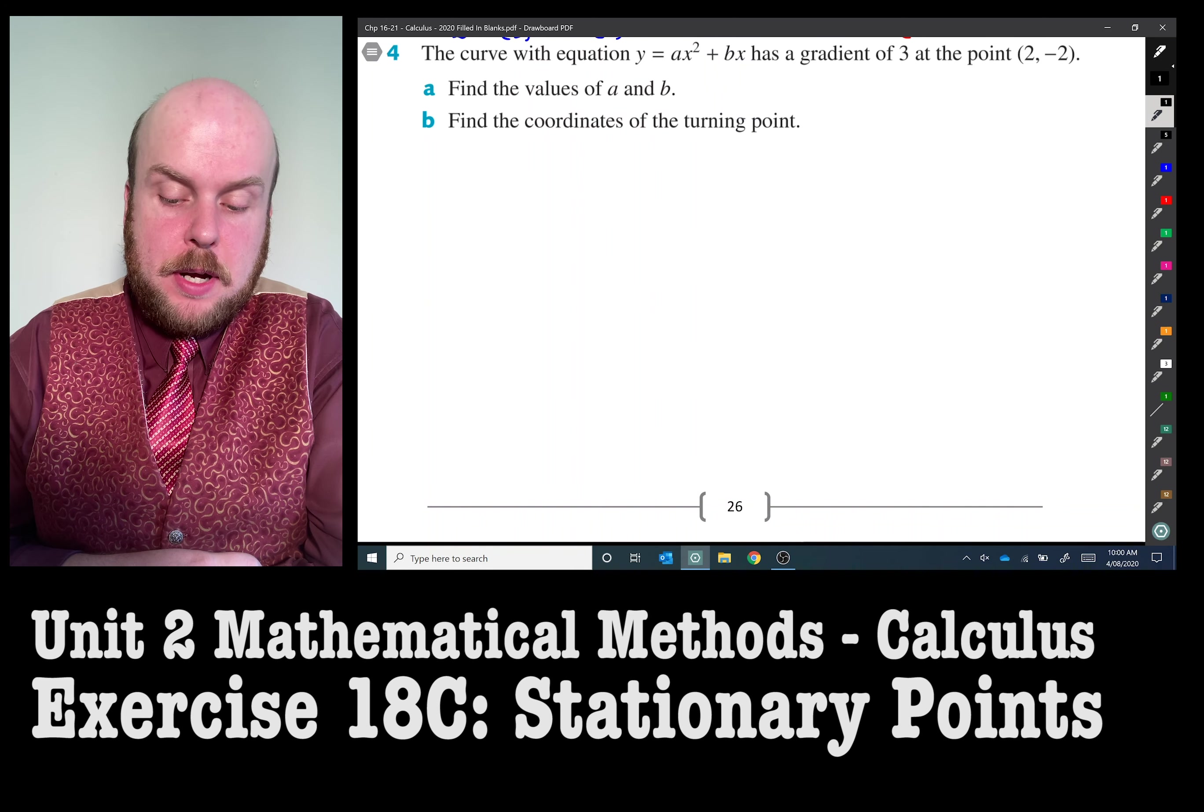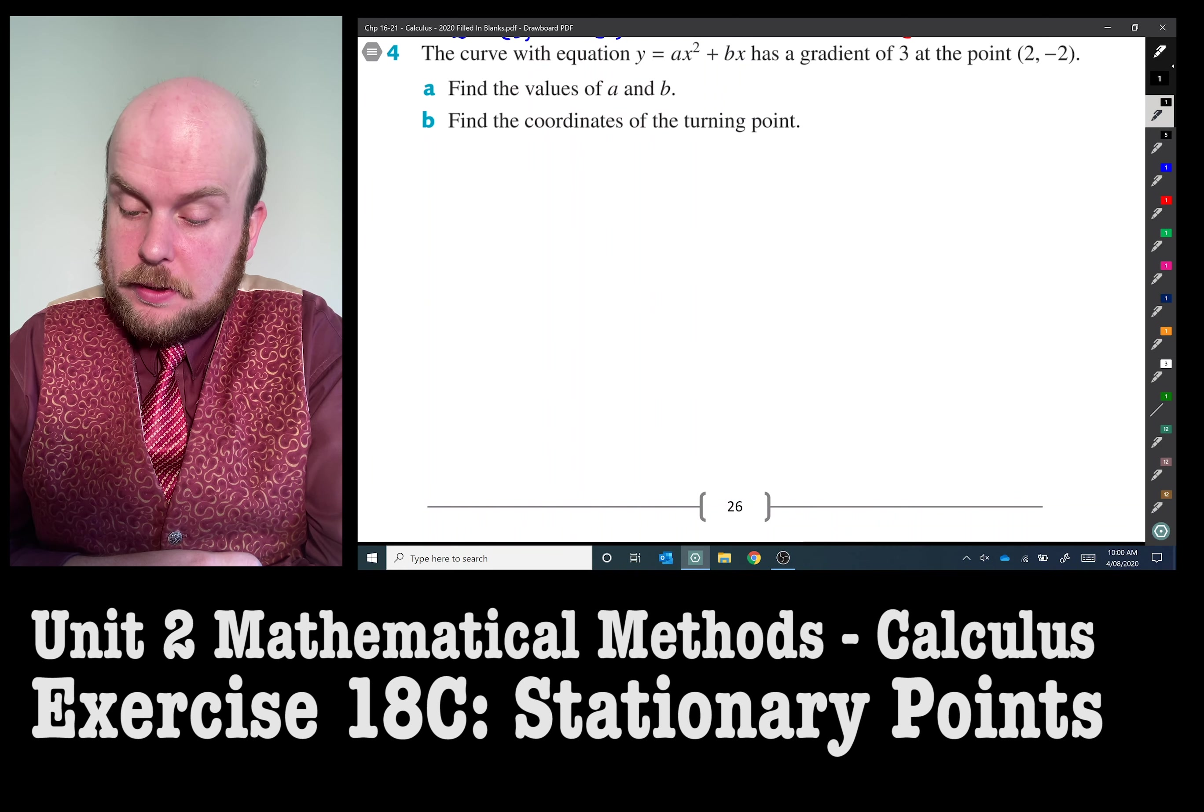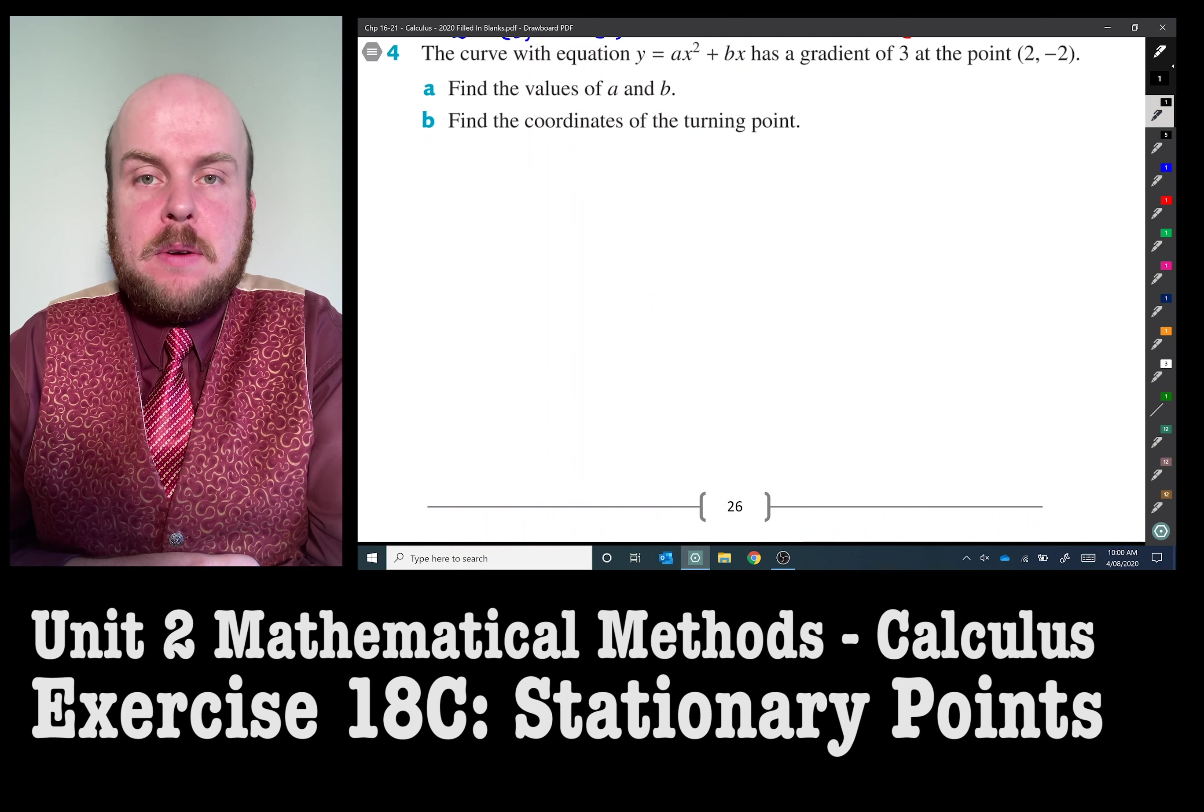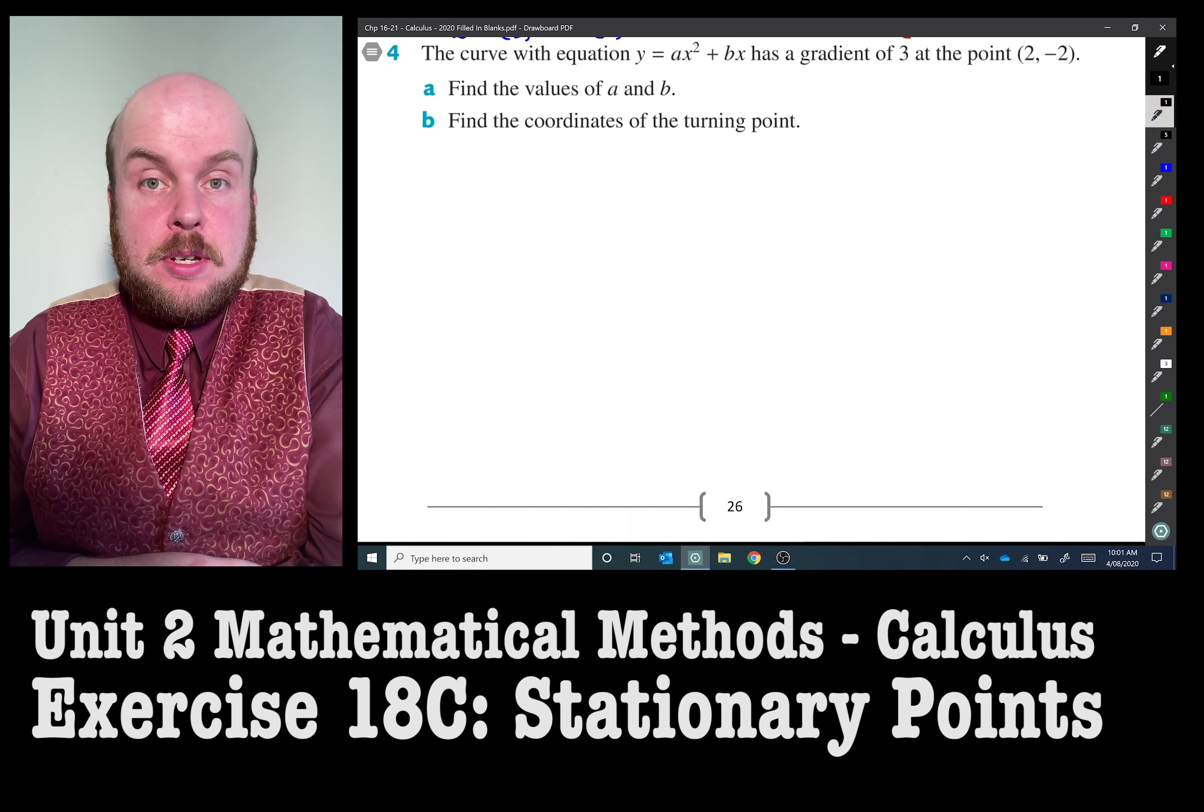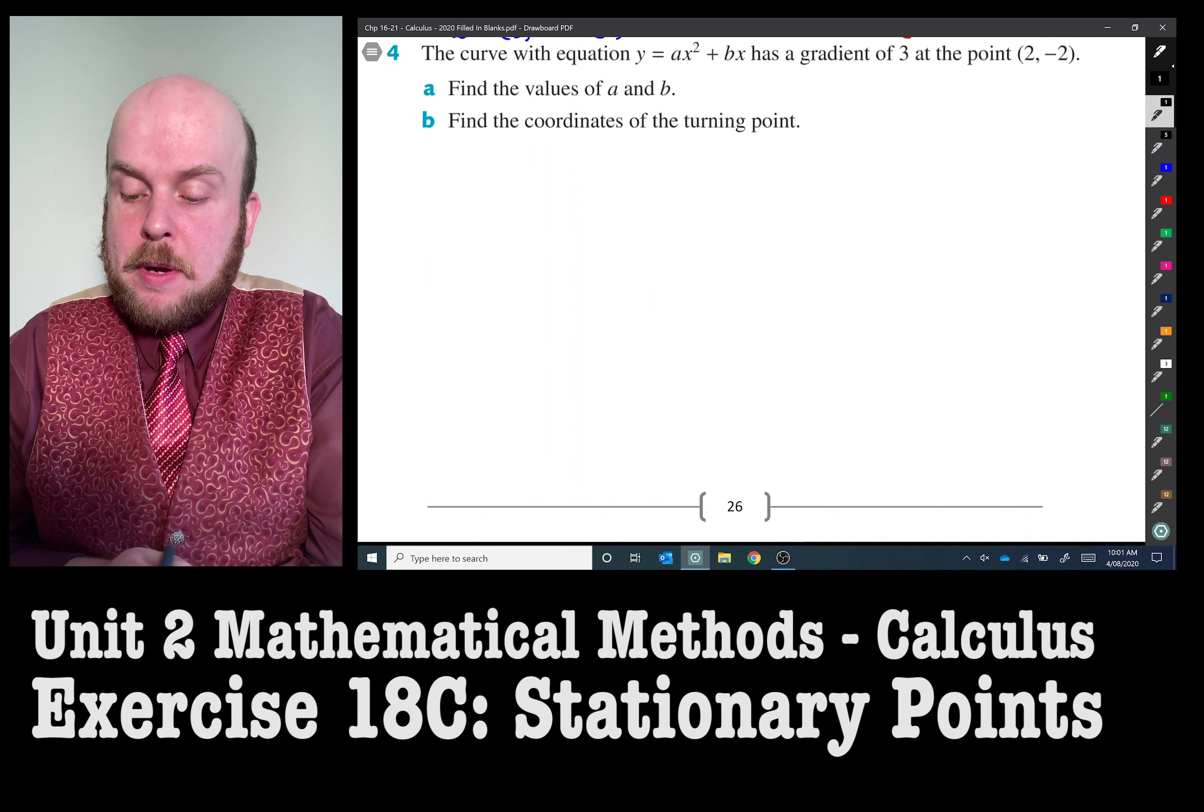Question four. The curve with equation y equals ax squared plus bx has a gradient of three at the point (2, -2). Find the values of a and b. Find the coordinates of the turning point. So we have got a coordinate and we've also got this gradient and we've got an a and b. You could possibly guess that this is going to end up being a simultaneous equation. So we're going to have to set up two simultaneous equations. One of them will be the original equation just with two and negative two substituted in. The other will be when we do the derivative of y equals ax squared plus bx with x equals two and then the derivative equaling to three.